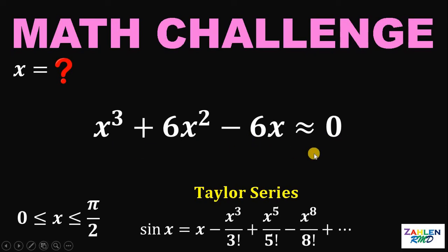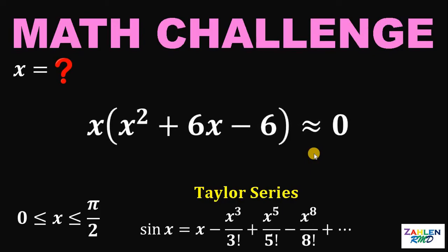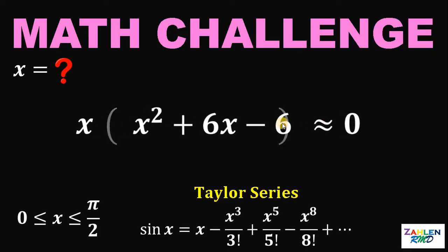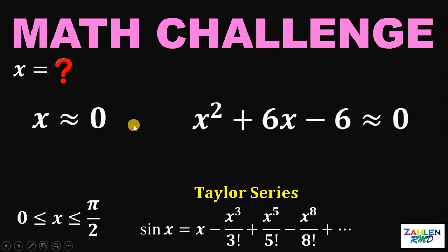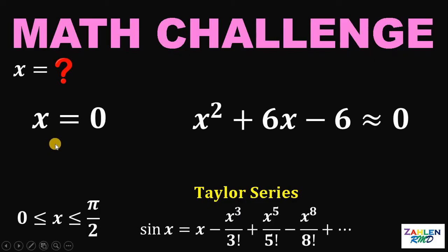Let's factor out x. Since this is approximately equal to 0, we can say that x is approximately equal to 0, or x squared plus 6x minus 6 is approximately equal to 0. For the first equation, x must be exactly equal to 0.